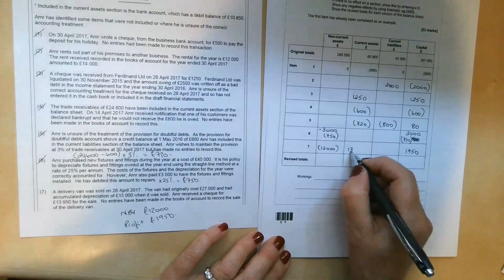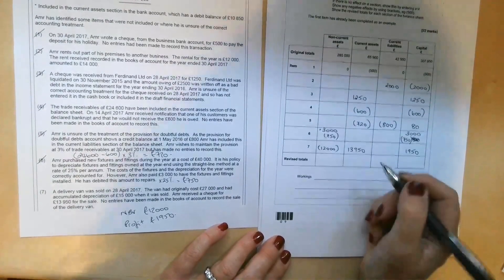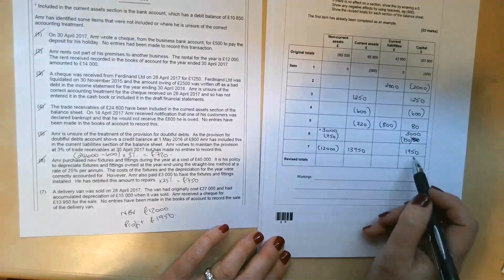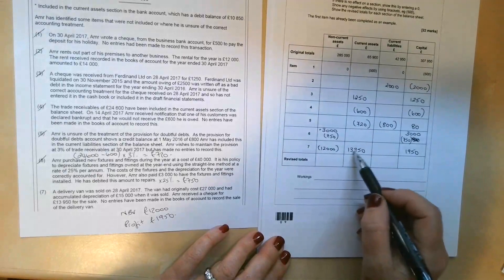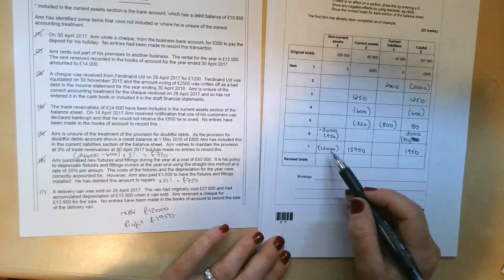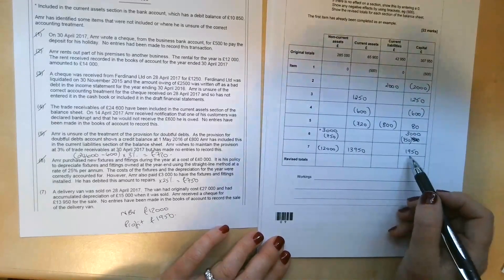And we're also going to need to add £13,950 into our current assets. So that's the double entry complete there. We're debiting current assets, we're crediting non-current assets, and we're crediting the income statement.